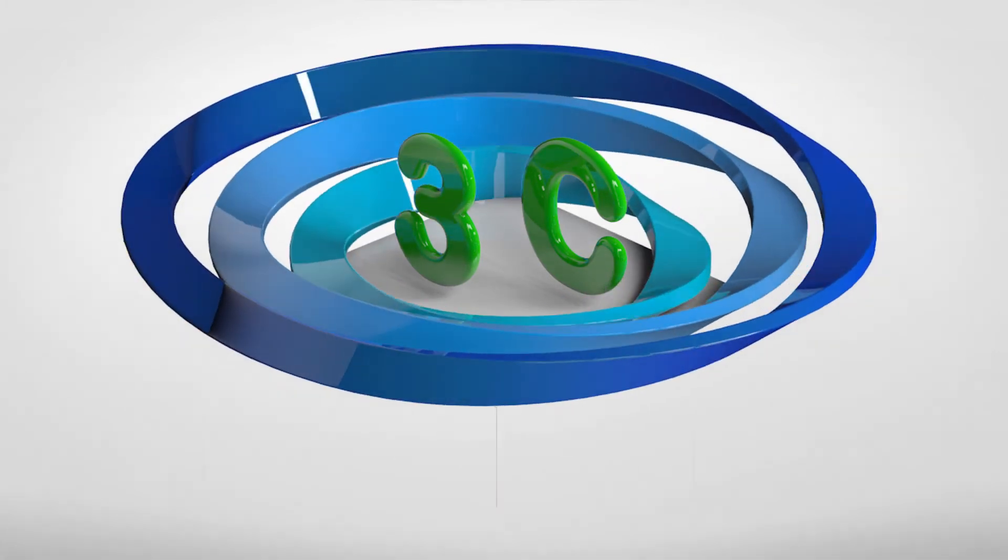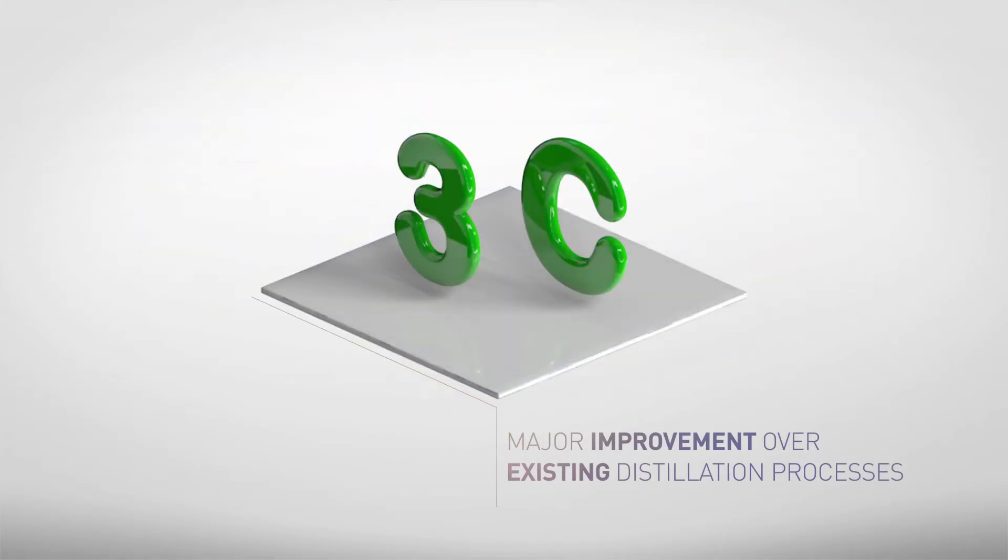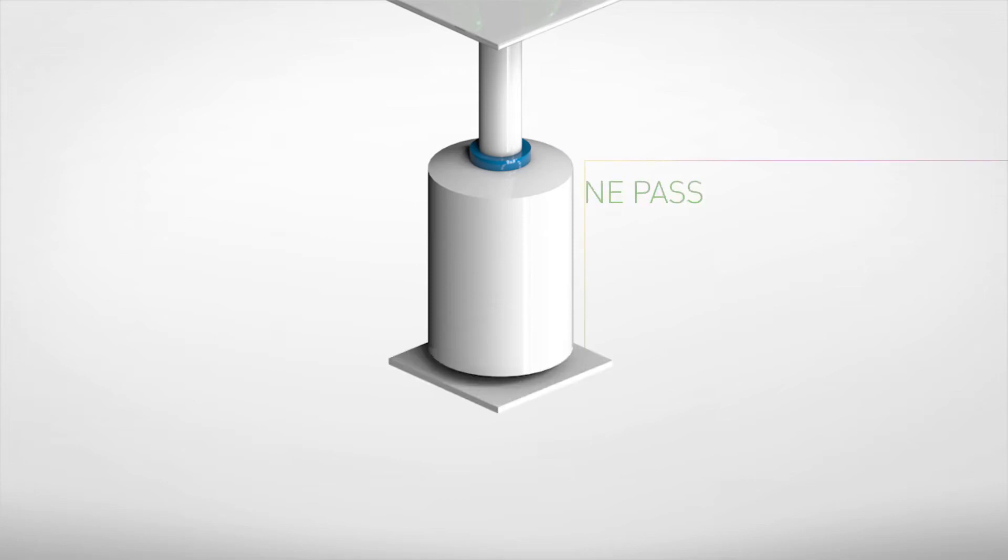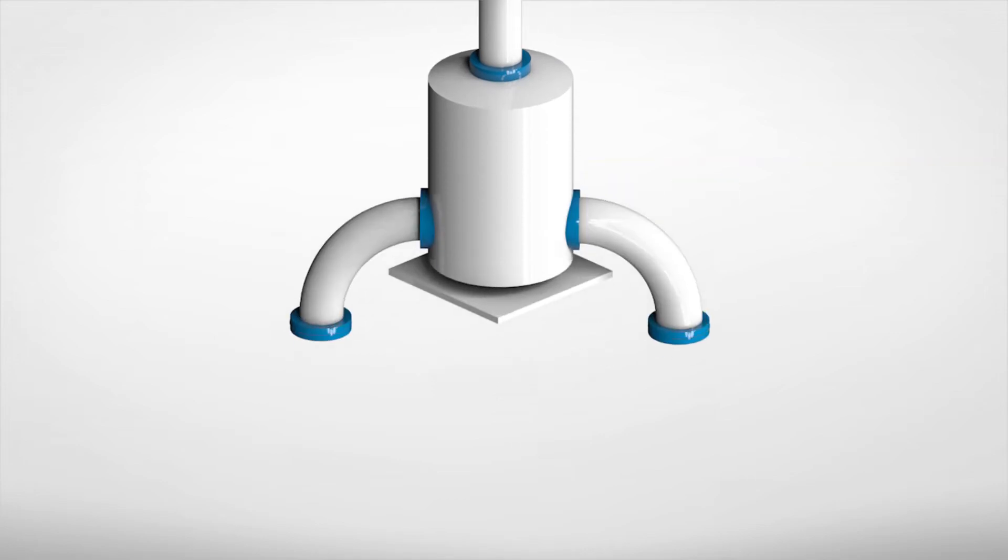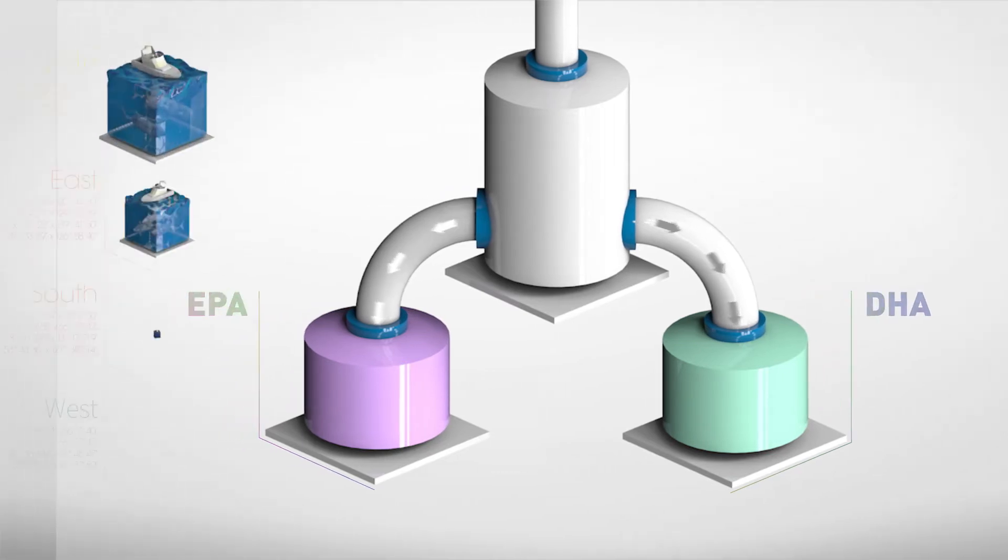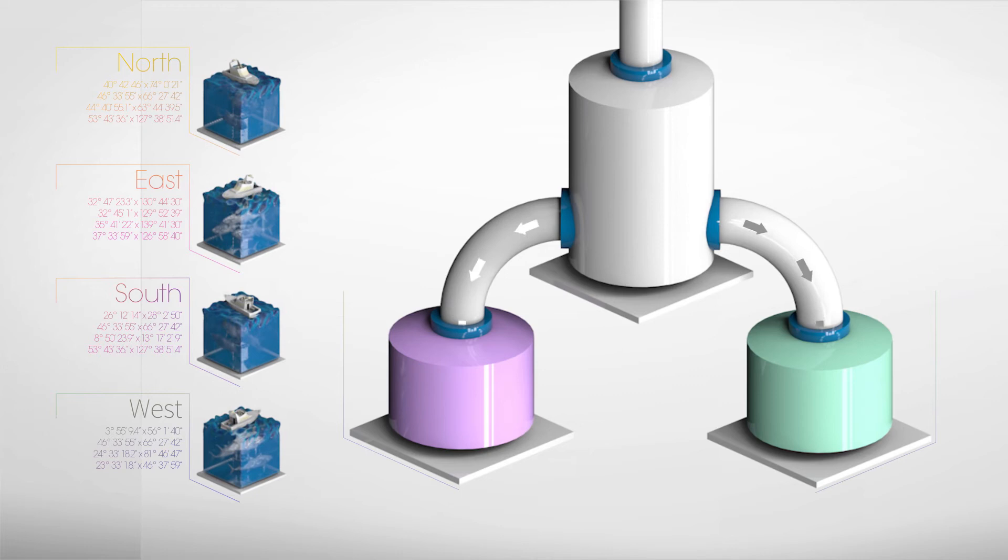It's a major improvement over existing distillation technologies. Instead of multiple separation passes, 3C requires only one. It separates EPA and DHA much more effectively. And it can use fish oils from a wider variety of fisheries around the world.